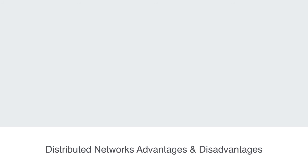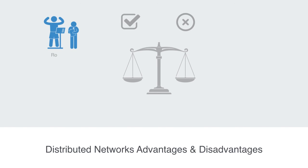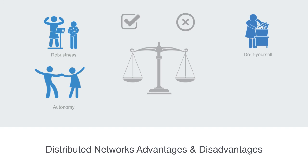Distributed networks have a number of advantages and disadvantages. On the positive side, they may be very robust to failure. As there are no critical or strategic nodes in the network, any node can theoretically be replaced by any other. Nodes may also have a high degree of autonomy, with little network maintenance tax placed upon them. But this type of network can be less efficient in many circumstances. Without centralized nodes, there cannot be any centralized batch processing that leverages economics of scale. And diffusion across the network can be slow, as there are no central hubs with which to reach many nodes in a single hop.